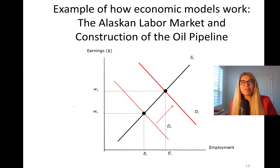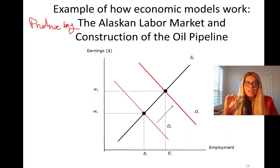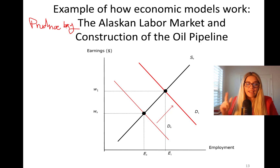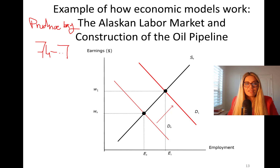Now I'm going to show you a quick example of how economic models work. This is the Alaskan labor market and the construction of the oil pipeline. In Prudhoe Bay, northern Alaska, in 1968 they discovered 10 billion barrels of oil in a remote, frigid area. They wanted to build a 789-mile pipeline — the Valdez pipeline. The project began in 1974, and from 1974 to 1979 they hired 50,000 workers. So on our graph, we have earnings in dollars on the y-axis and employment — number of workers — on the x-axis.